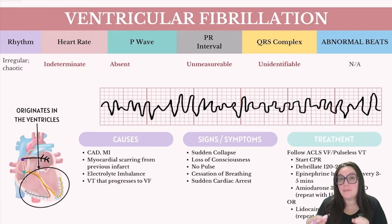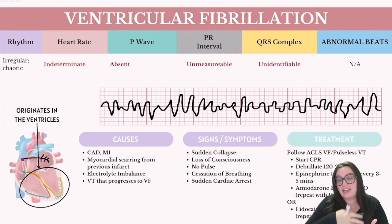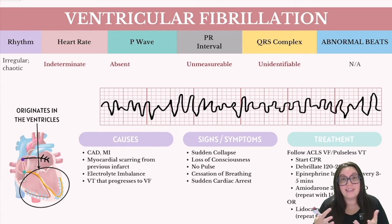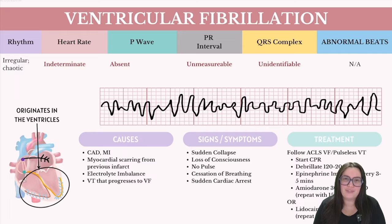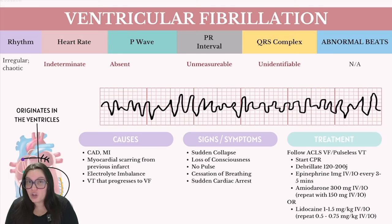The signs and symptoms are much more severe because this is a more lethal rhythm. You're going to see potentially sudden collapse, as the rapid erratic pulsation of the ventricles leads to ineffective heartbeats with no meaningful contraction or blood delivery to tissues. Loss of consciousness, no detectable pulse, cessation of breathing, and sudden cardiac arrest are the hallmark signs. Treatment follows the ACLS ventricular fibrillation and pulseless VTAC algorithm: CPR, defibrillation, epinephrine, amiodarone, or lidocaine.